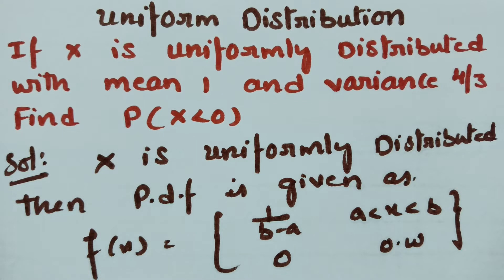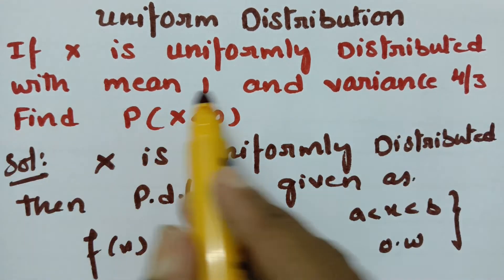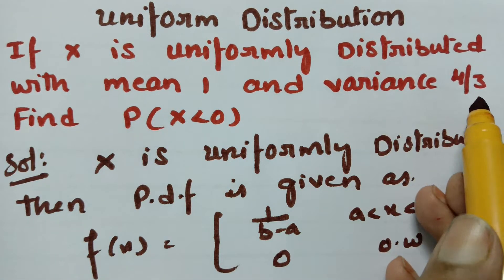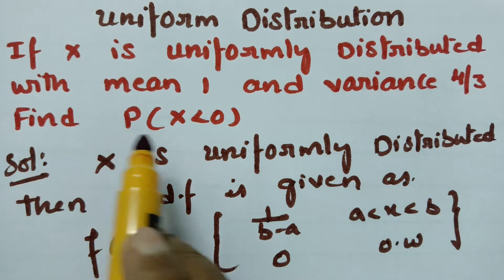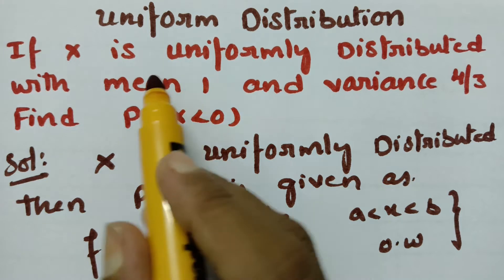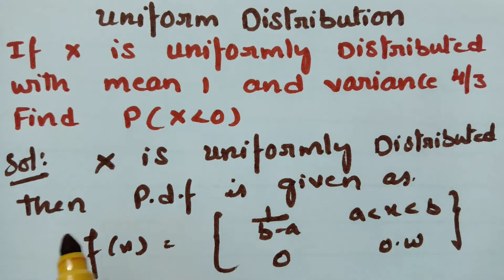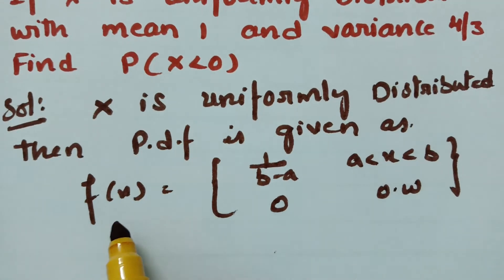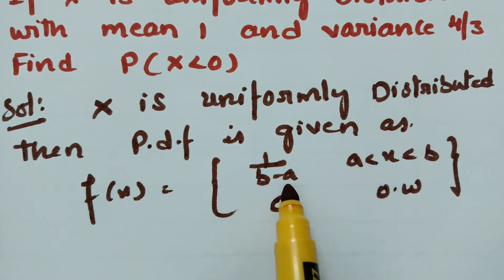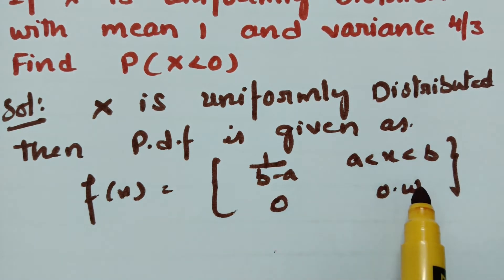Today's video is on uniform distribution. The problem is: if X is uniformly distributed with mean 1 and variance 4/3, we have to find the probability of X less than 0. If X is uniformly distributed, the probability density function is given as f(x) = 1/(b − a), where x lies between a and b, and 0 otherwise.